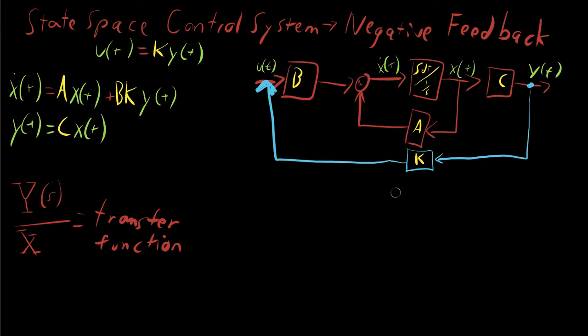So that we can push all the eigenvalues, all of the poles of the transfer function, things on the bottom of the denominator, back into having negative real components.